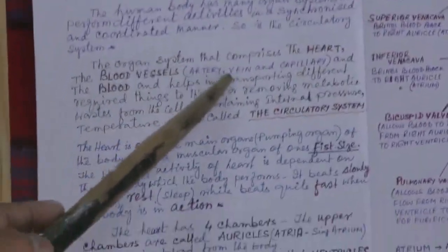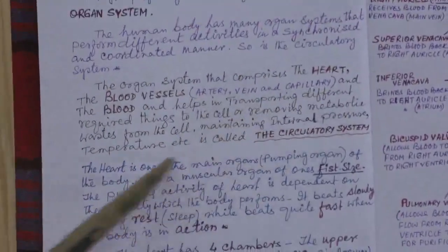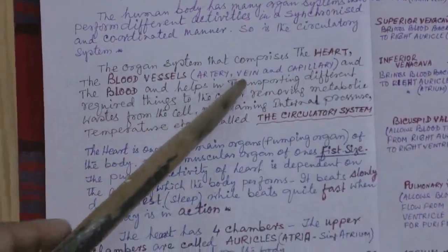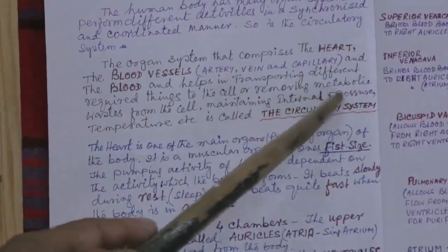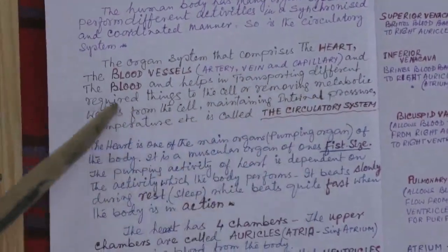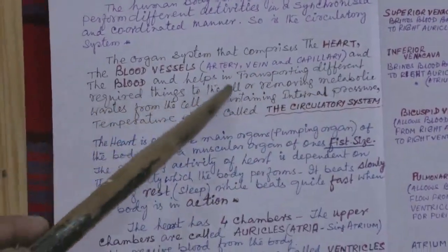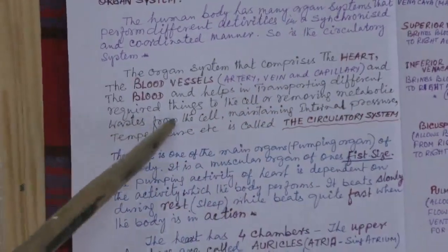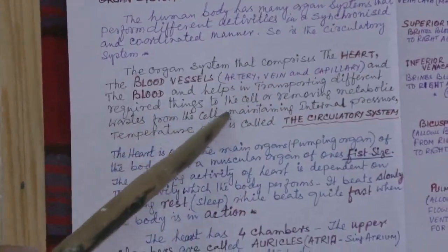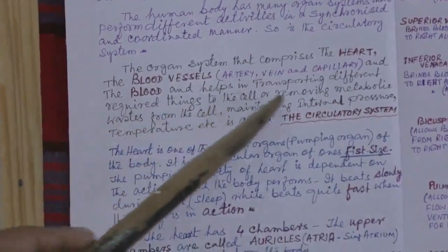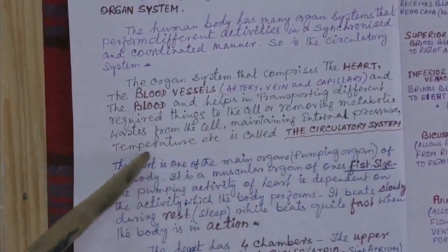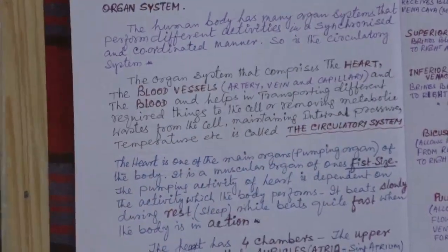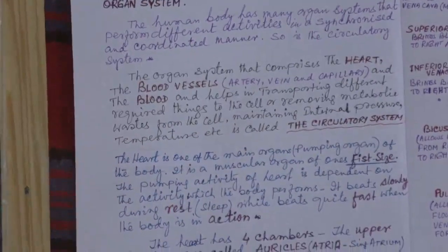So the organ system comprising the heart, the blood vessels — artery, vein, and capillary — and the blood helps in transporting required things to the cell and removing metabolic waste from the cell, maintaining internal pressure and temperature. This is called the circulatory system.